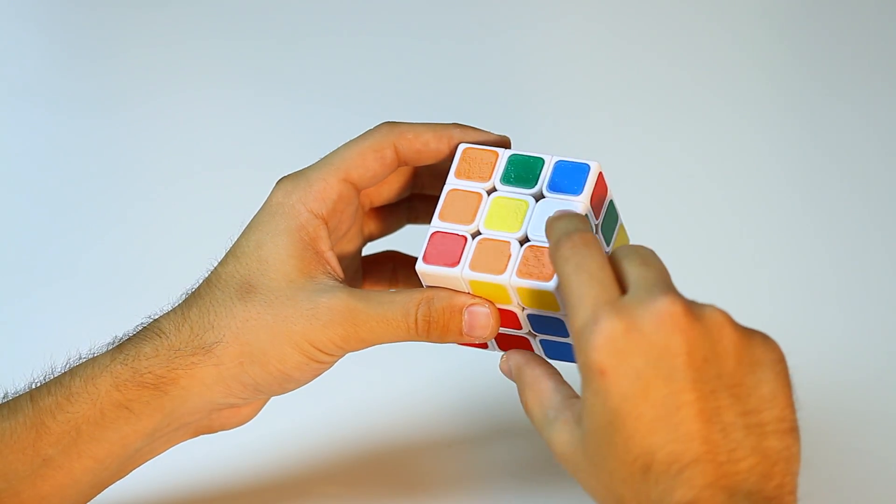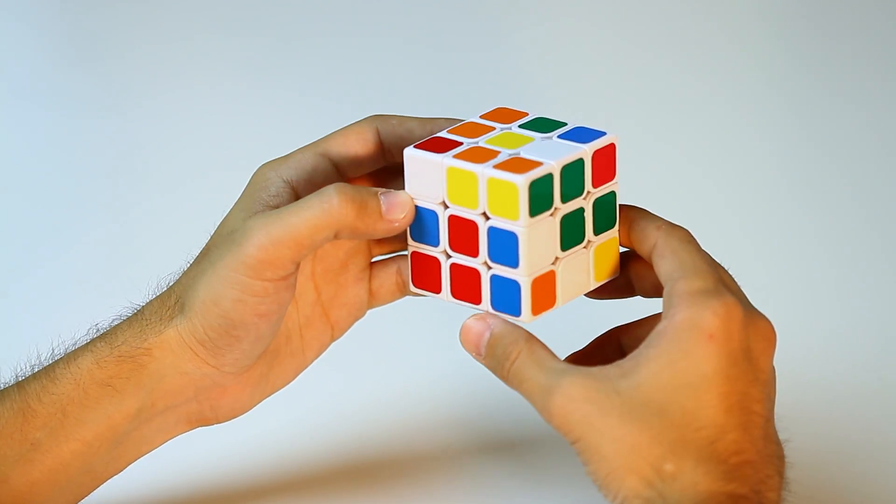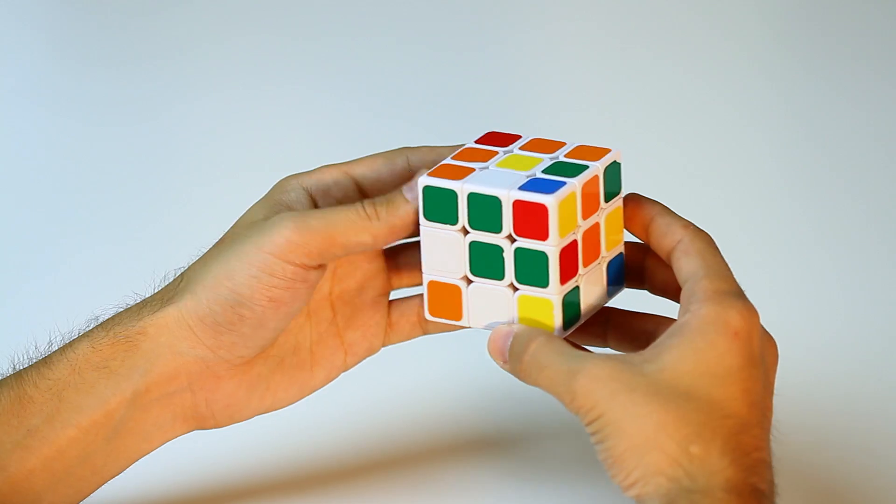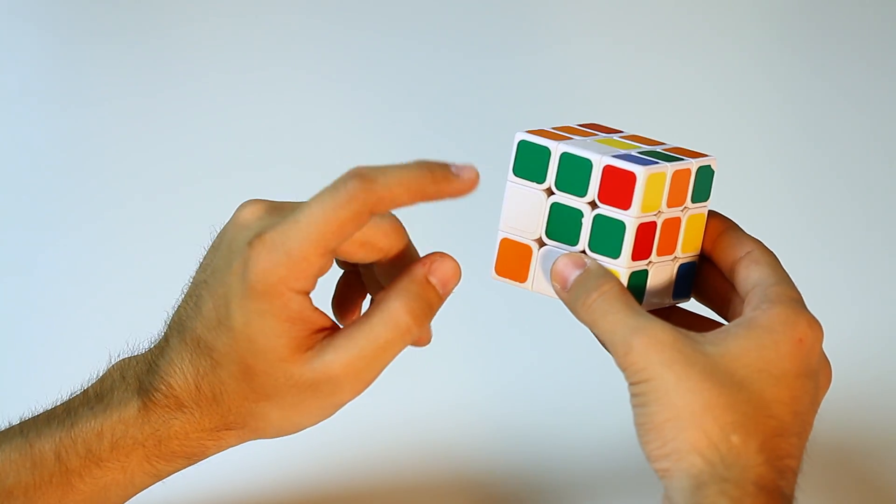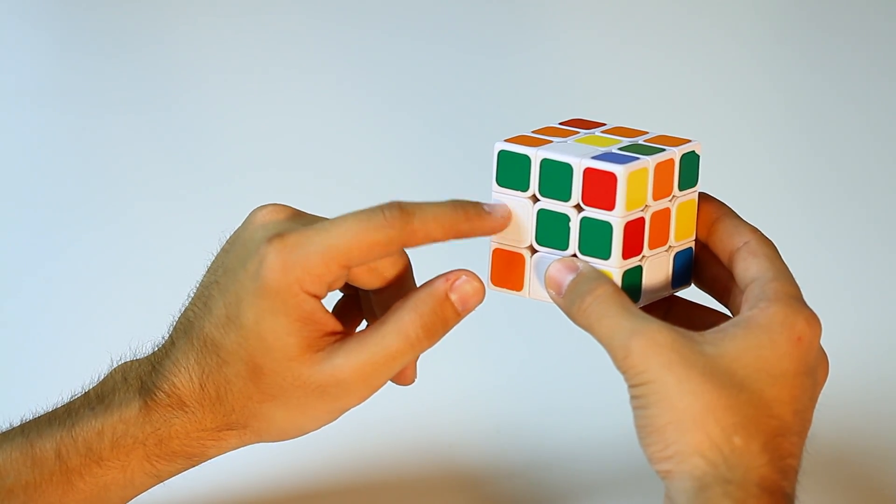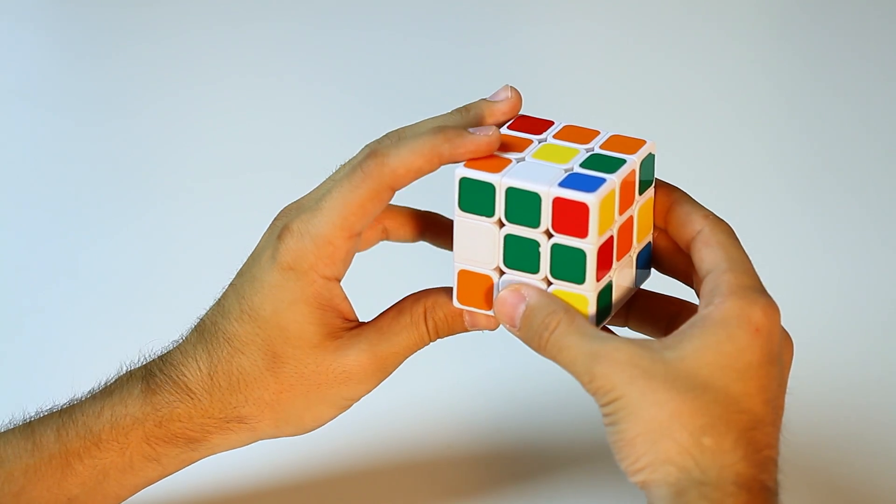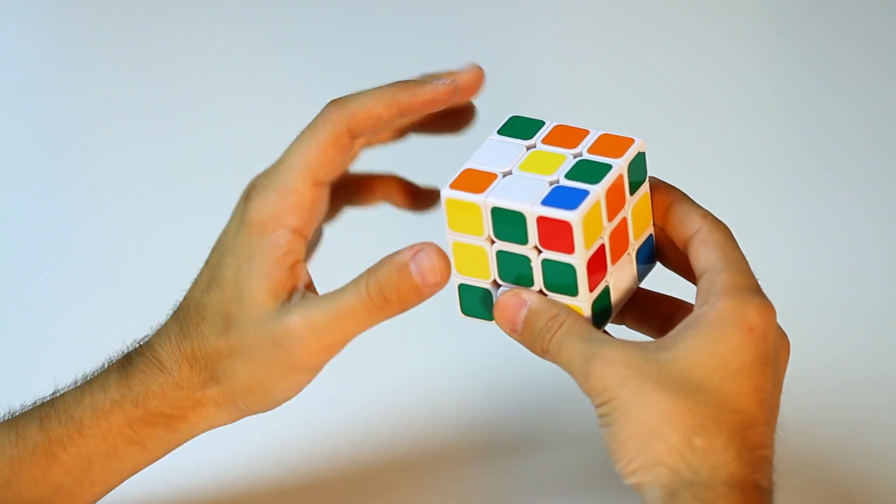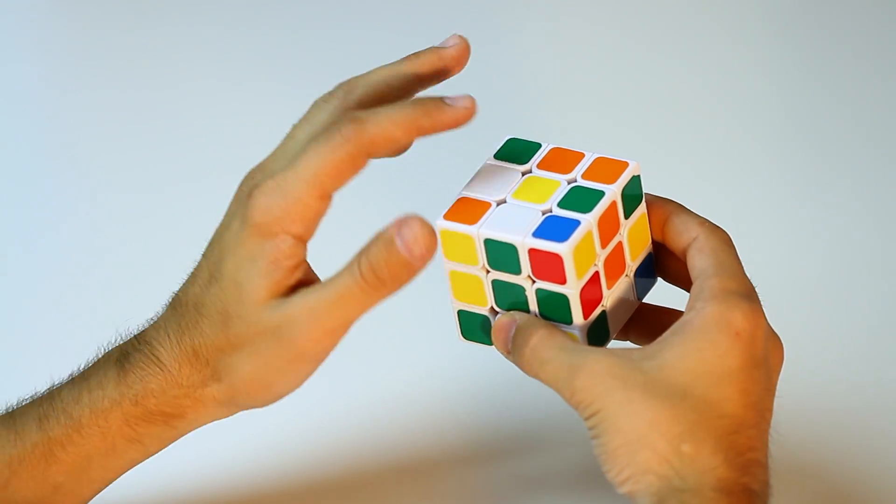It looks like we already have one white edge piece already in place, so let's go ahead and find the other three. All right, so as we rotate the cube around, we do see that there's one facing us. So let's go ahead and just move this left side up. So now we have two out of four. We just have to get these two now.